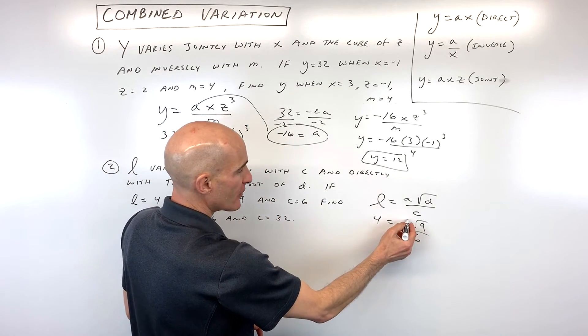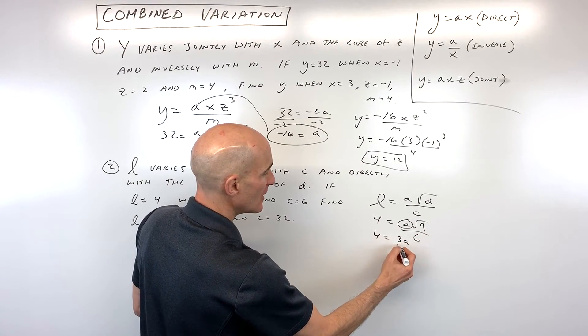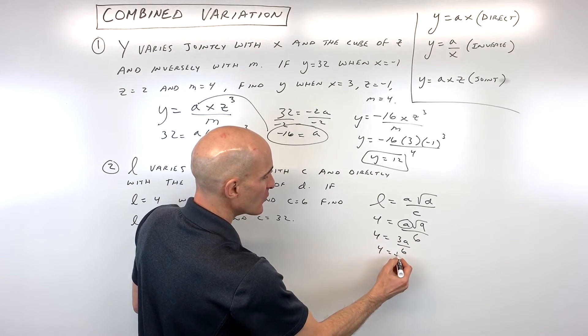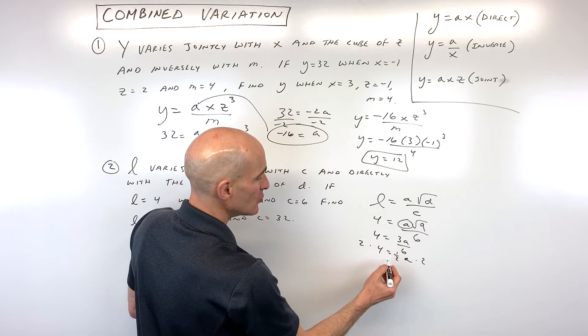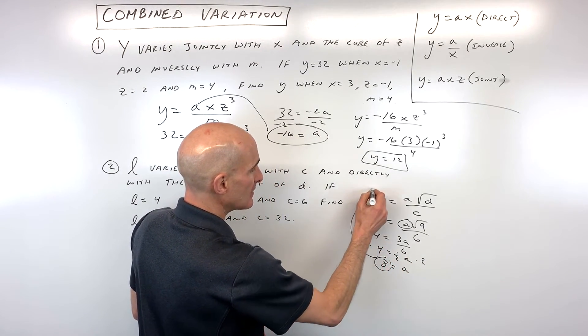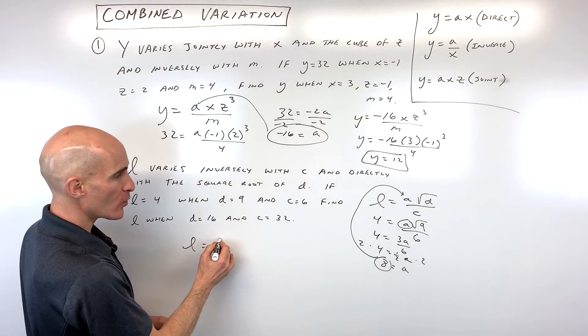Let's go ahead and solve for a now. We've got square root of nine, which is three. So we have four equals three a over six, which three divided by six is one half. So we have four equals one half a. If we multiply both sides by two, you can see that a is coming out to eight. So if we take that eight and put it back in for a, now we have a more specific equation that we can work with.